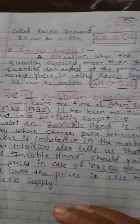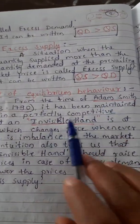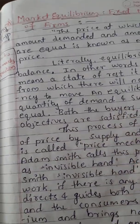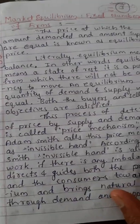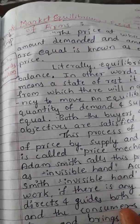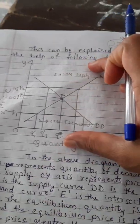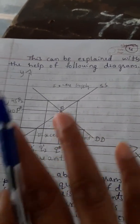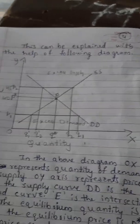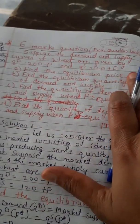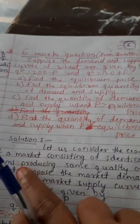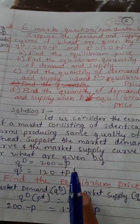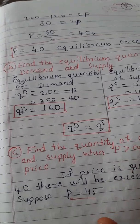We also covered excess supply, out-of-equilibrium price, and the concept given by Adam Smith. For the six-marks question on market equilibrium with a fixed number of firms, a diagram was provided explaining prices of goods and services. We solved a six-marks question from the question bank covering equilibrium price, equilibrium quantity, supply and demand equilibrium, excess demand, and excess supply.